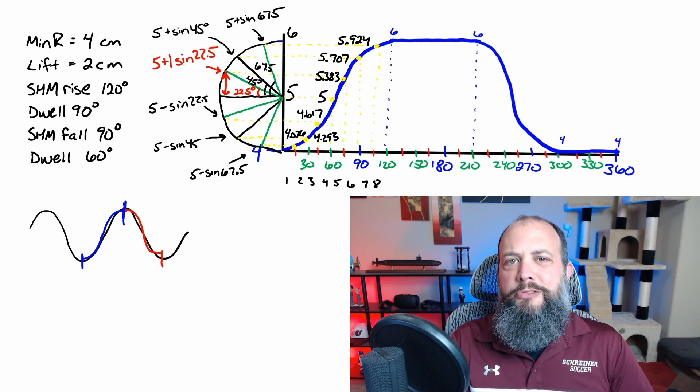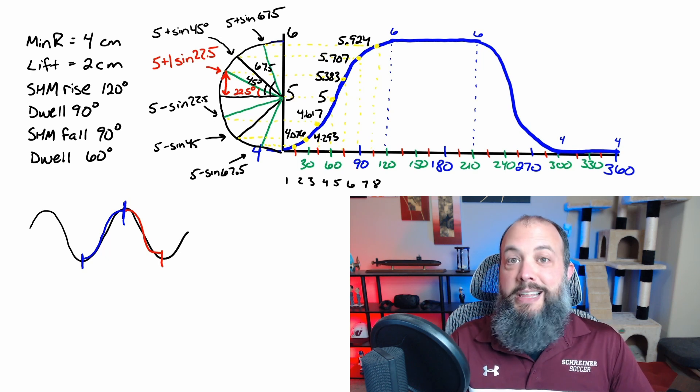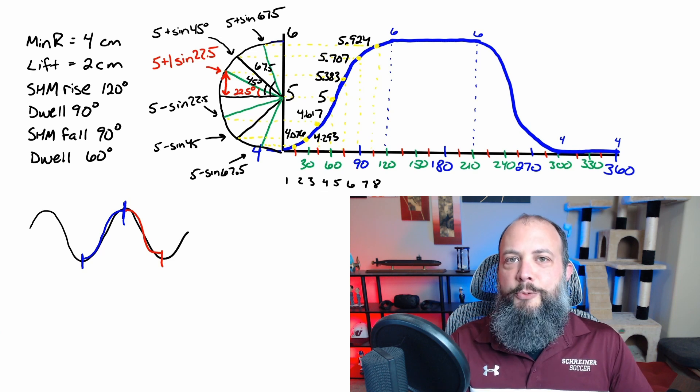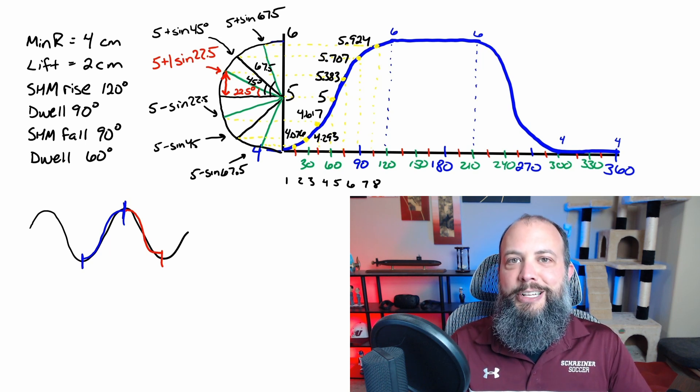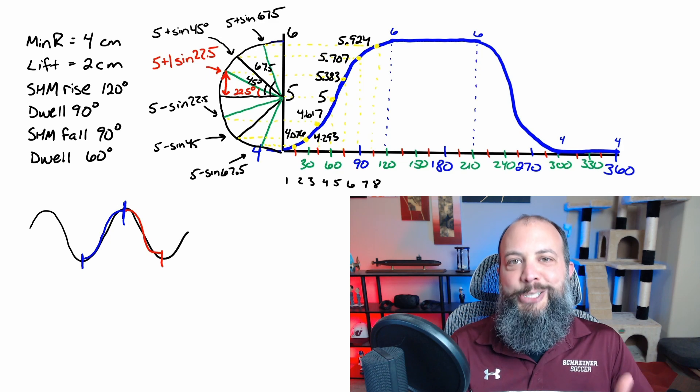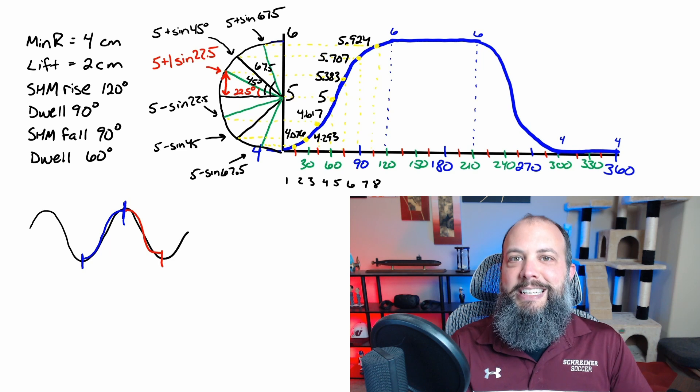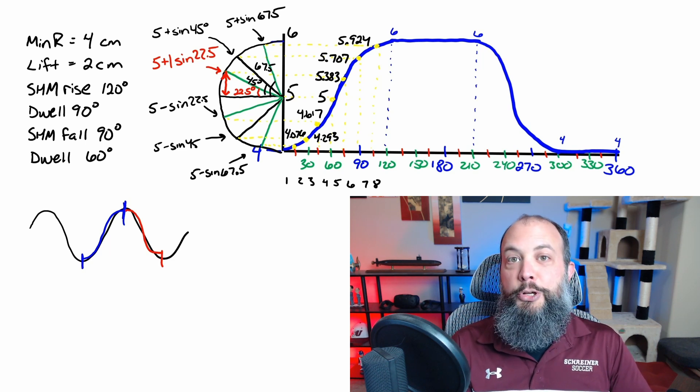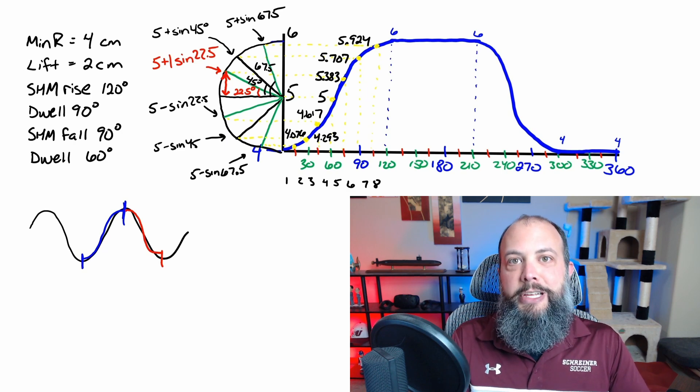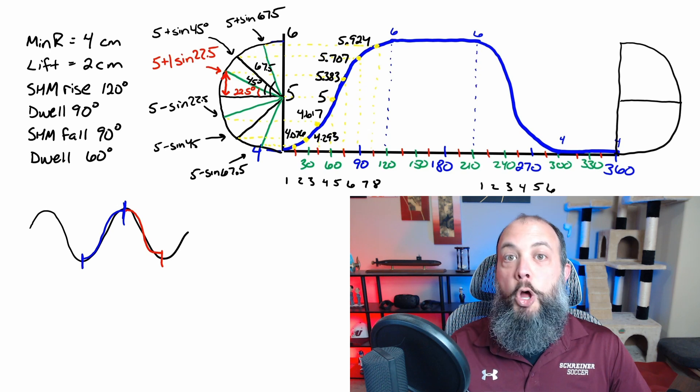So why do we even do this in the first place? Why use simple harmonic motion instead of just a linear line, a straight line? And the answer to that is to make sure that the motion is smooth. A sine wave starts off tangent to the horizontal line. And this means that when the cam starts increasing or starts decreasing in its location, it will do so gently. And then when it reaches its next height, it will also settle in gently into its dwell. Having a linear change here is going to result in a sudden jerk where the angle changes suddenly.